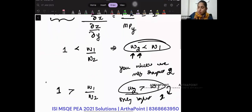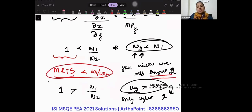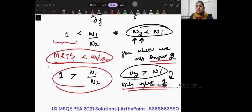So very simple. You just compare MRTS with the price ratio, and whichever is cheaper, you use that. If MRTS is less than W1 by W2, use input 2. If MRTS is greater than W1 by W2, use input 1. If it is equal, you will use 1 or 2 or both. It does not matter.